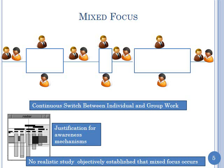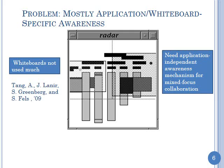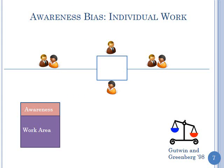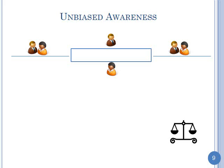If you want to do a realistic study, you have to go beyond whiteboards — studies have shown people just don't use electronic whiteboards. Ideally you'd like a mechanism that is application independent. You also need to be very careful about awareness bias: if the awareness area is small compared to the work area, you bias towards individual work. On the other hand, if the awareness mechanism takes disproportionate space, it biases towards group work. Ideally something balanced is needed.